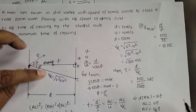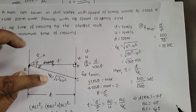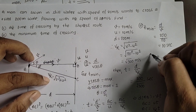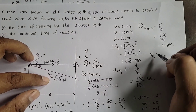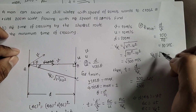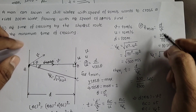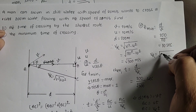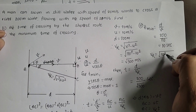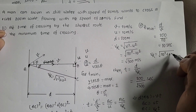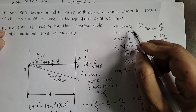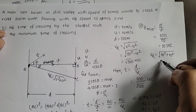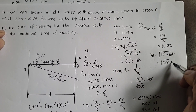Now the resultant velocity Vr for the minimum time case: Vr = √(V² + U²) = √(20² + 10²) = √(400 + 100) = √500 meters per second.